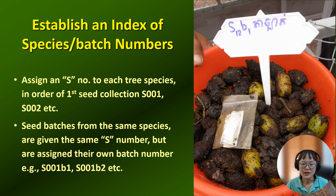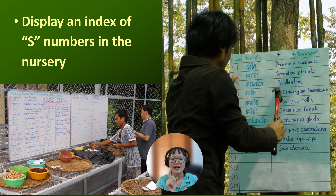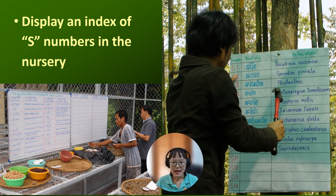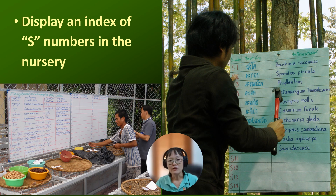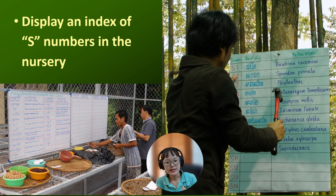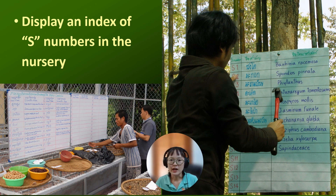For example, here in the picture you see S12 B1 — that's the 12th species we work with and it's batch number one. It's also very good practice to display the S number in the working area of the tree nursery. On the left-hand side, you see a whiteboard with species names and S numbers written on it, so people who are not familiar with those species can reference them. Every time you have seed coming in, don't forget to label each batch.